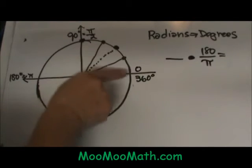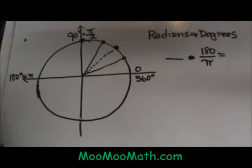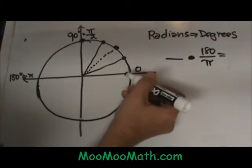So I have a unit circle with just the first quadrant laid out for you. Let's talk about the radians.